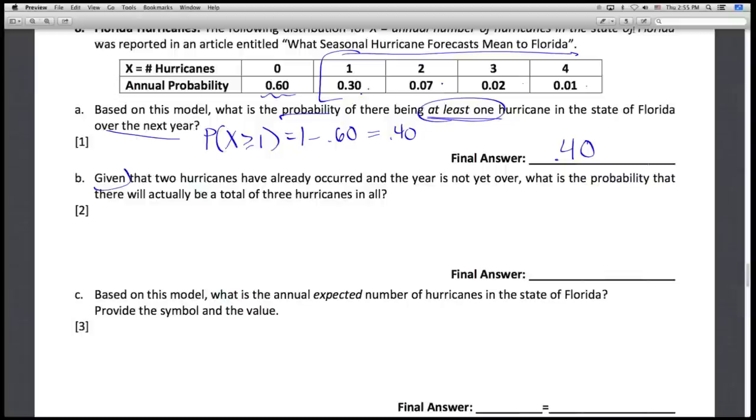Now in Part B I'm seeing right at the start this key word of given. So given that two hurricanes have already occurred and the year is not over yet, what's the probability there will actually be a total of three? So we know in this distribution that we're already at 2, that the observation for our x for this coming year is going to be at least 2. It's something in this range. We don't have to worry about these other two parts of the distribution.